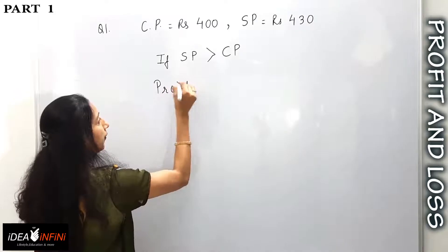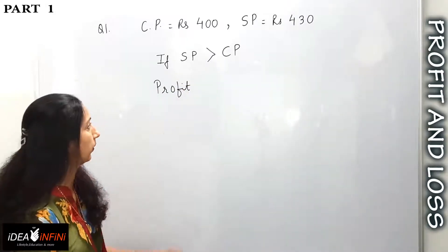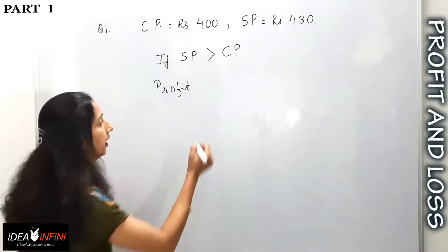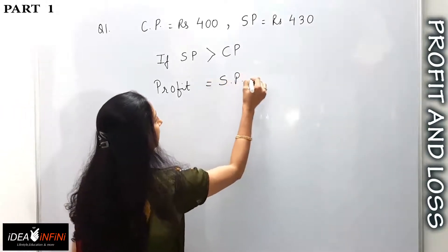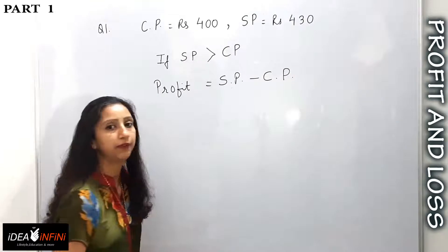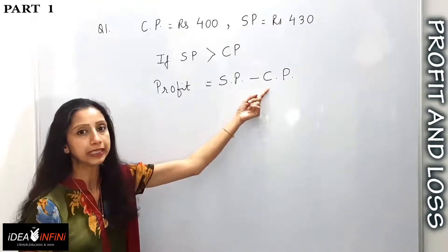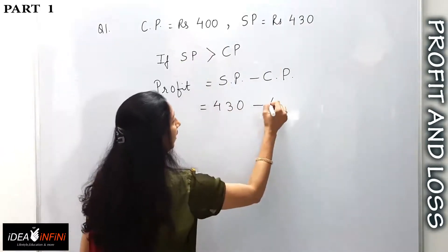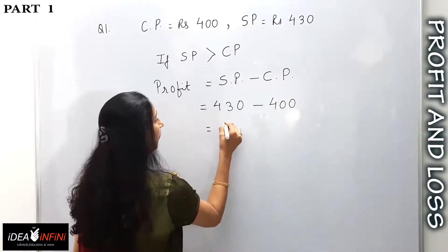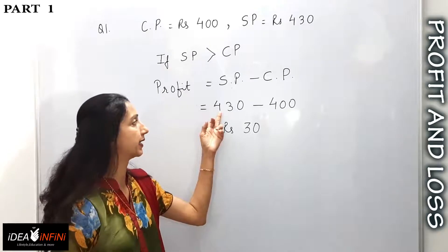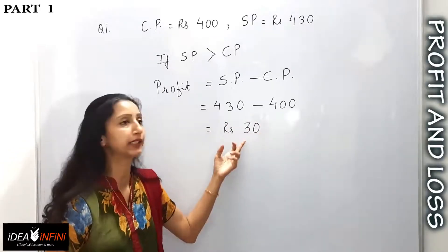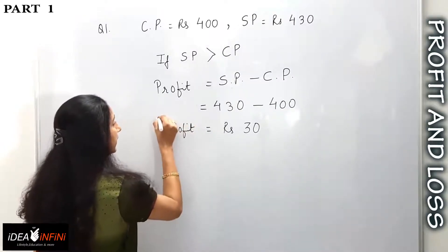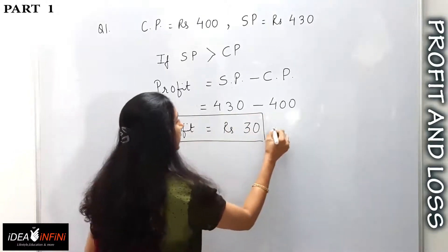It is a profit. Now, the amount of profit is the difference in the values of SP and CP: Profit = SP minus CP. Filling in the values: SP is 430 and CP is 400, so the profit is 430 minus 400, which equals rupees 30. So the total profit on this transaction is rupees 30.